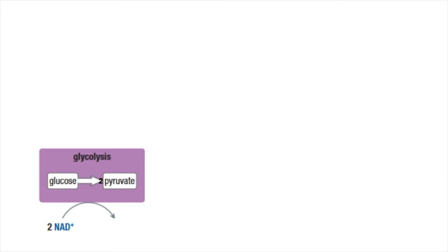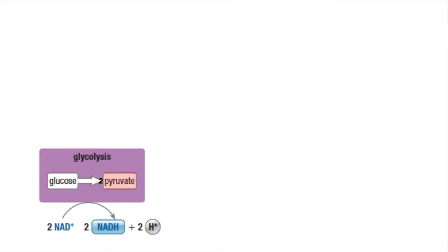So we begin with glucose, and during glycolysis, glucose is broken down into two pyruvate molecules. During this reaction, two ATP are produced, and two NAD+ are reduced into two NADH molecules. Glycolysis is happening in the cytoplasm of the cell, and those two ATP molecules are used as needed to provide energy for the cell.